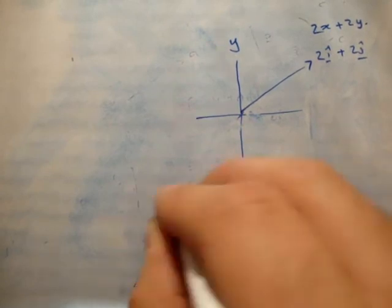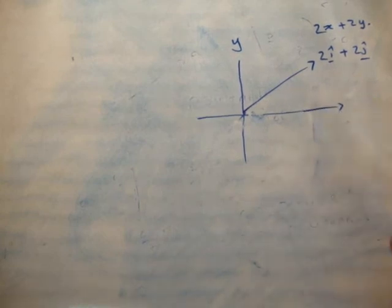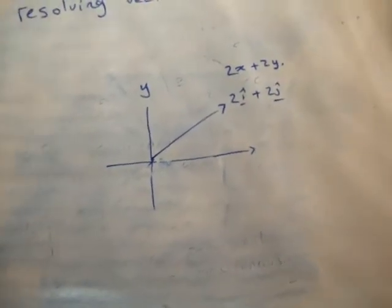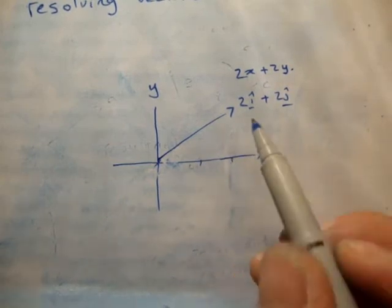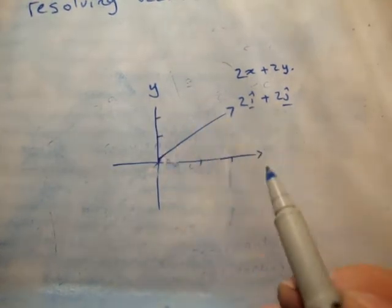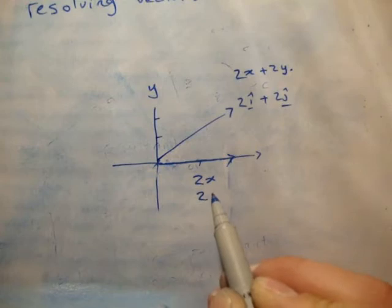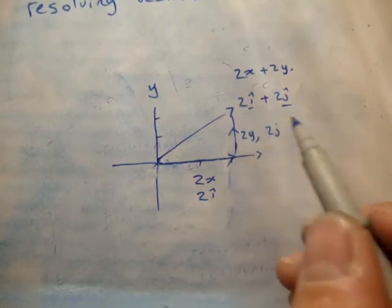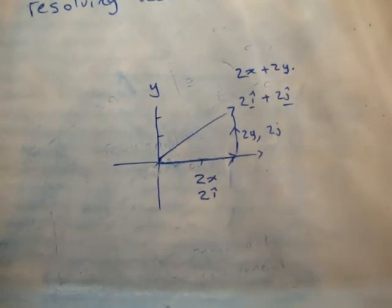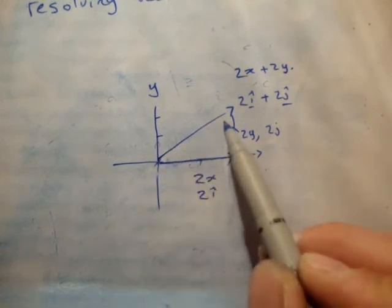We want to find the components of the vector 2i plus 2j in terms of its X and Y axes. If we draw this, there are two units in the X and two units in the Y. This vector came from adding the vector 2i and the vector 2j. By adding those you get your resultant, so there are two units in the X dimension and two units in the Y dimension.